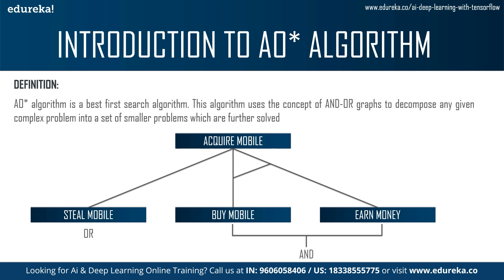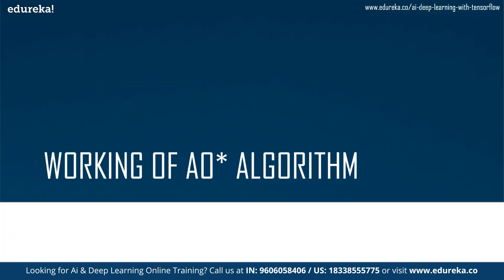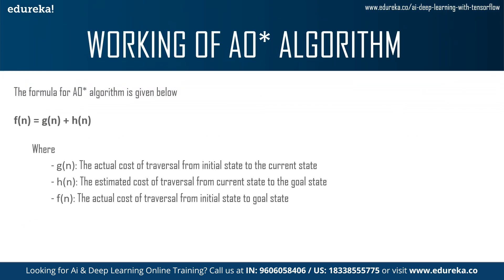Next, let us look at the working of AO star algorithm and its formula. The formula is: f(n) = g(n) + h(n). Here, g(n) represents the actual cost of traversal from the initial state to the current state. For example, if you need to travel from Canada to the US and then from the US to Mexico, and you are currently in the US, g(n) is the cost you incurred to travel from Canada to the US.